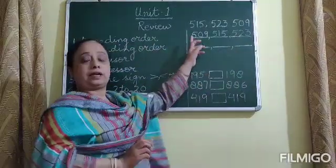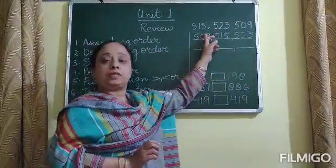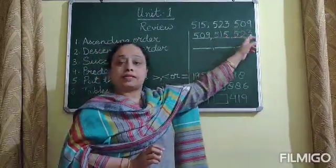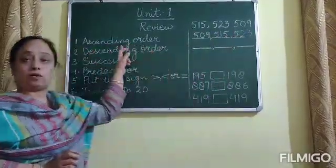So, this is the arrangement of numbers from smallest to greatest—that is, ascending order.